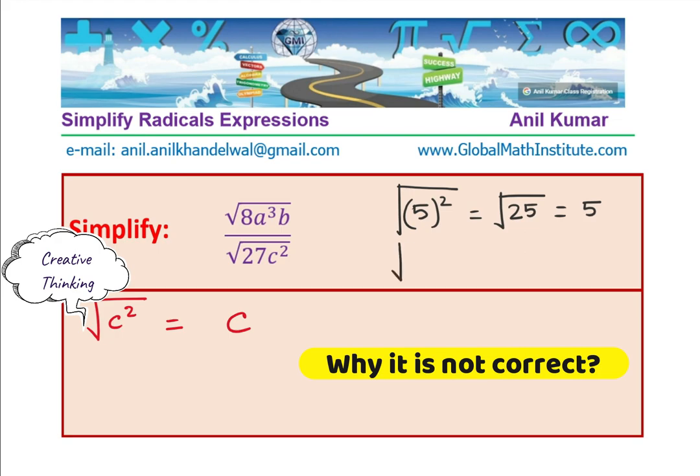Now, think about minus 5 square. So, if I have minus 5 square, when I square it, it also becomes 25. And the square root is again 5. Do you see that?